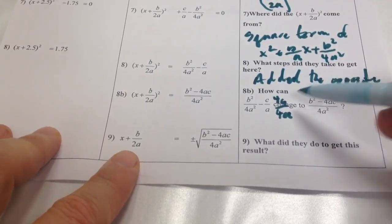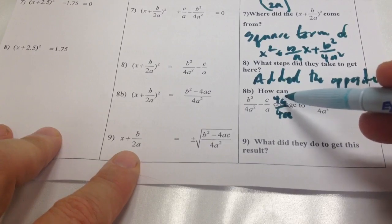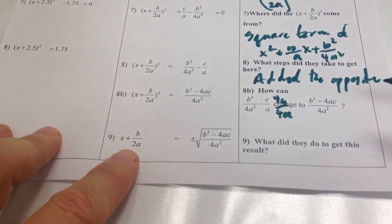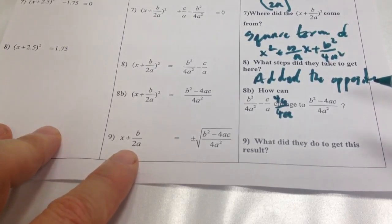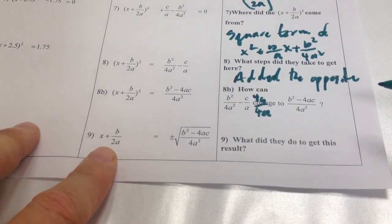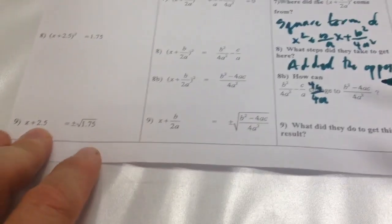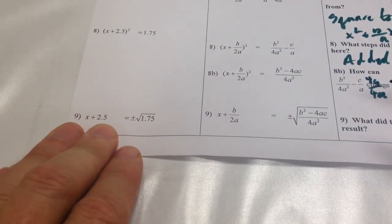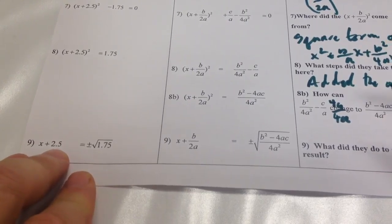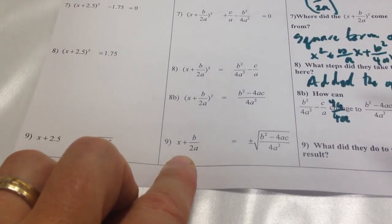So they just multiplied this term right here times 4a/4a. So they didn't change anything there. They just simplified it. So now I've got 4ac/4a², and they can combine all that. b² - 4ac over 4a². Which they didn't have to do that, but they're working their way towards a traditional-looking quadratic formula. So they knew they had to do that.